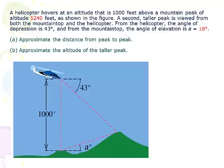From the helicopter, the angle of depression, and notice they have that labeled properly, is 43 degrees. And from the mountaintop, that's the lower mountaintop, the angle of elevation is A. That angle A is 18 degrees. So, we want to find the distance from peak to peak, and we also want to find the altitude of the higher peak.